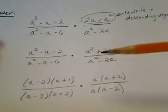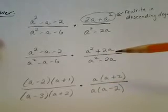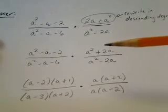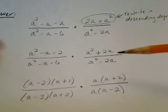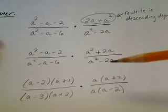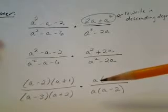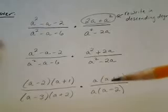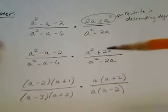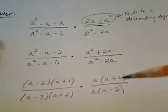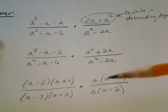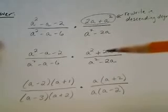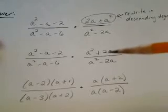For the numerator of the second fraction, a squared plus 2a, I look for a greatest common factor. I do find one: a goes into a squared and also into 2a. So I factor out a, leaving a times (a plus 2). Checking: a times a is a squared, and a times positive 2 is positive 2a. That gets me back to where I started, confirming the factoring is correct.